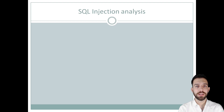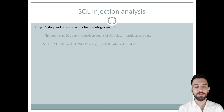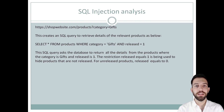Let's say there is a shopping site which displays all the products in categories. If a user clicks on category 'Gifts', the browser requests a URL like this. This creates an SQL query that retrieves all the details about the relevant products — those with category 'Gifts' and released equals 1. This restriction 'released = 1' is used to hide unreleased products, which have released equals 0.